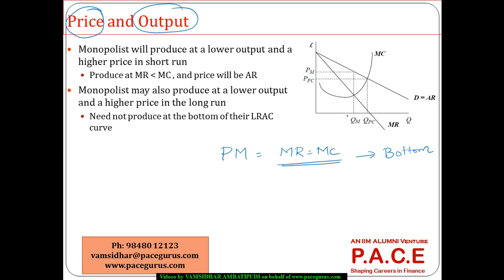The interesting thing we have to understand is: the marginal cost curve cutting the marginal revenue curve gives us the monopoly output quantity. If we look at the price that would be charged by the monopoly for this quantity on the demand curve, this quantity on the demand curve goes for a much higher price. So, the monopoly is charging a higher price.